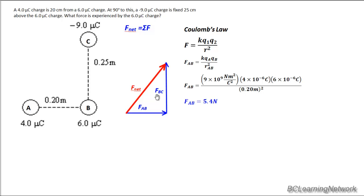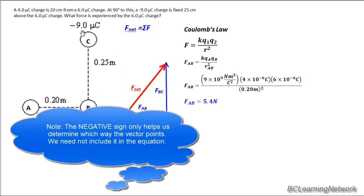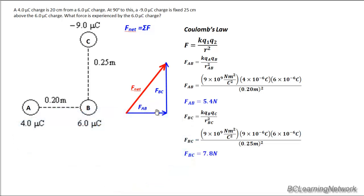Similarly, we can solve for FBC, the vector that's pointed upwards. And the only thing that really changes is our distance is 0.25 meters. And Q2 becomes 9 times 10 to the negative 6 coulombs. So now that we have the values of FAB and FBC, FBC we've determined is 7.8 newtons upwards.